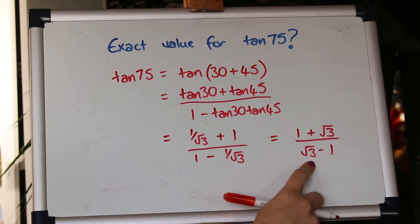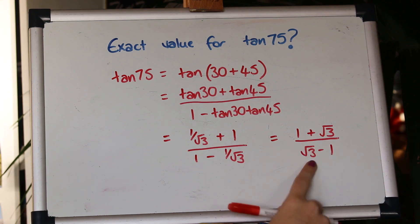Now that's simple enough as it is you could leave it like that or if they wanted you to go further and ask for it in a different form what you could do here is rationalize the bottom. So you would multiply both top and bottom by the complement of that denominator so root 3 plus 1.